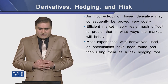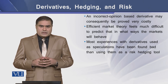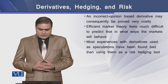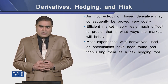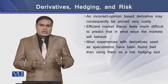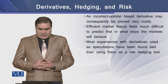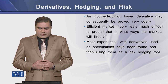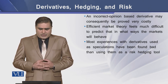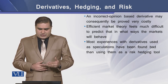Efficient market theory makes it very difficult to predict in what ways the firm will behave. As far as the use of derivatives as a speculation instrument and as a hedge tool is concerned, literature shows that most experiences with derivatives used as speculation have been found very bad compared to derivatives used as a tool of hedging.